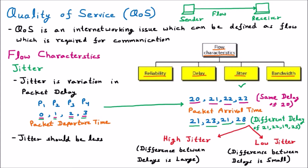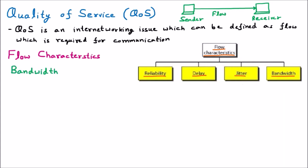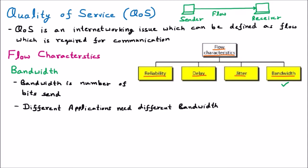The next flow characteristic is bandwidth. Bandwidth is the number of bits we can send through the transmission medium. When a sender and receiver are connected with a transmission medium, how many bits of data we can send is called the bandwidth. The bandwidth requirement for different applications is different — different applications need different bandwidth.